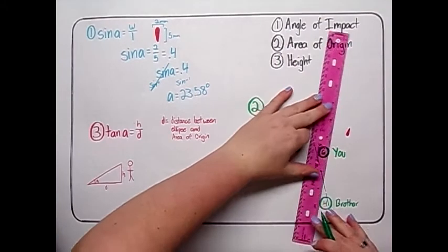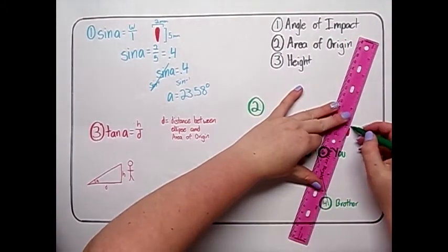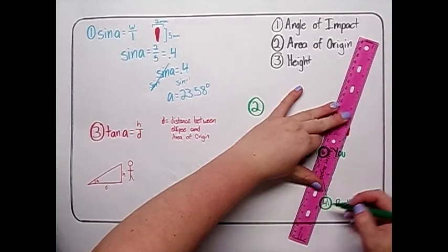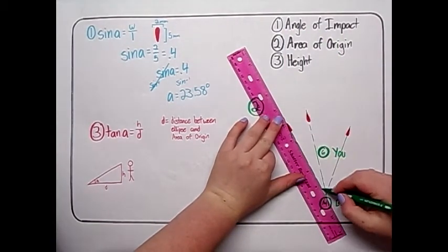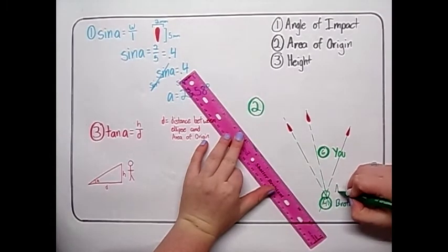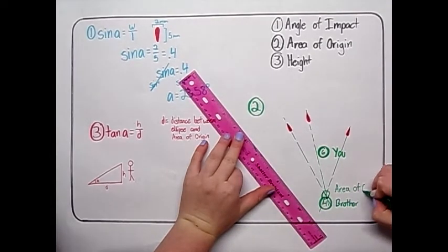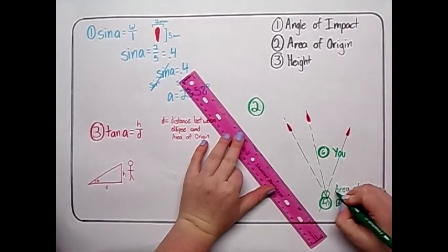Using a ruler, draw a line directly down the middle of each ellipse in the direction that the ellipse was coming from. The point where all the lines intersect is called the area of origin. As you can see, the area of origin is directly in front of your brother. You show this to your mom, but she needs a little more convincing. On to step 3.